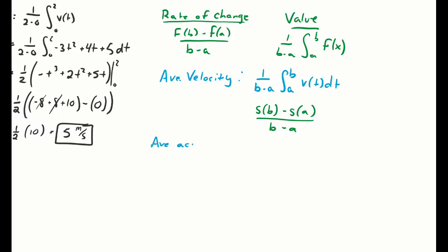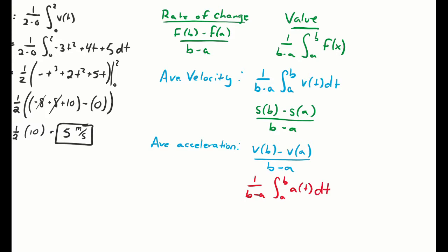What if asked for average acceleration? If given the velocity function, it's not an integral — acceleration is the change in velocity, so average acceleration is v(b) minus v(a) over b minus a. If given the acceleration function and asked for average acceleration, then it's 1 over b minus a times the integral of the acceleration function, because the output of that function is acceleration. You use the integral when the output of your function matches the average you're trying to find.